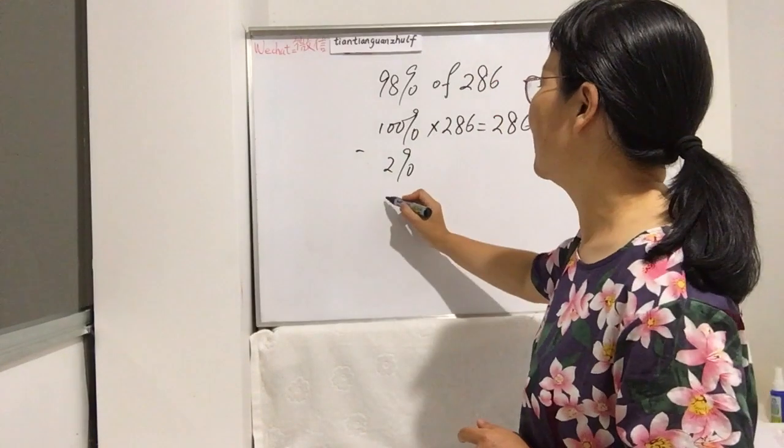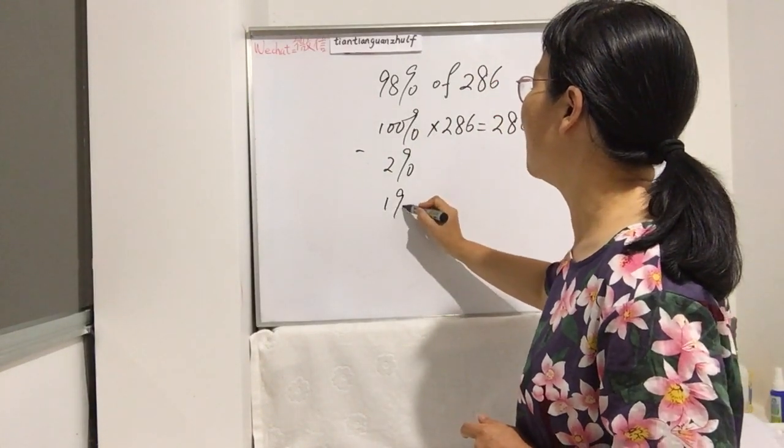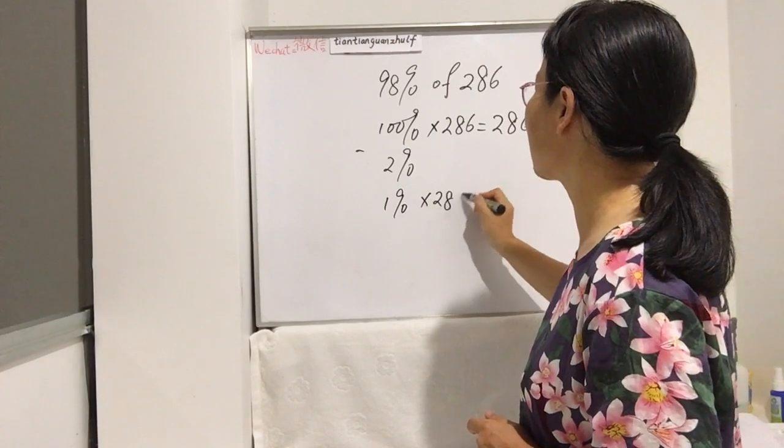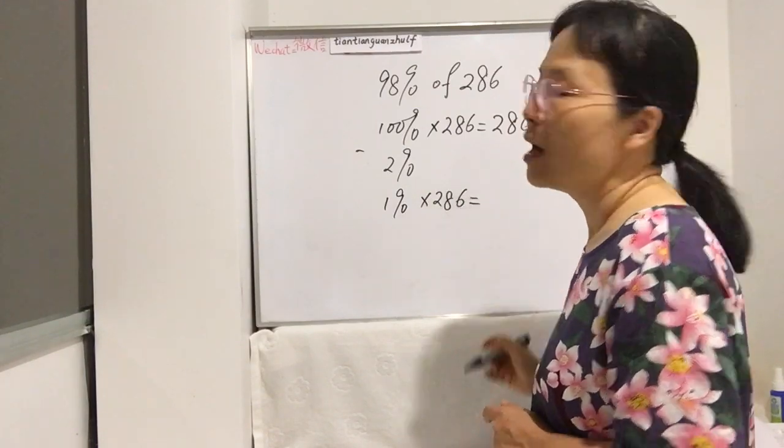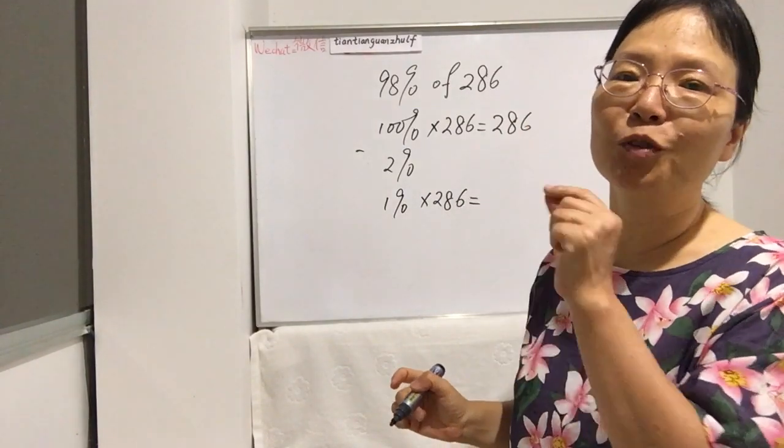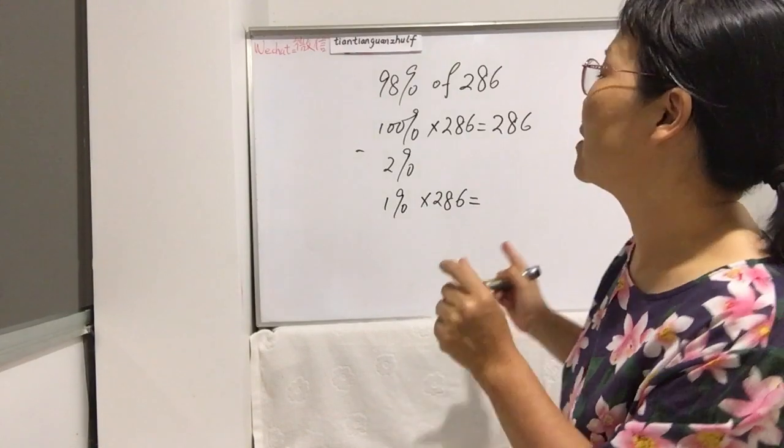And now let's work 2%. Let's first work 1%. 1% of 286: to see how much, we just said 10% is move one decimal place, and 1% is move two.